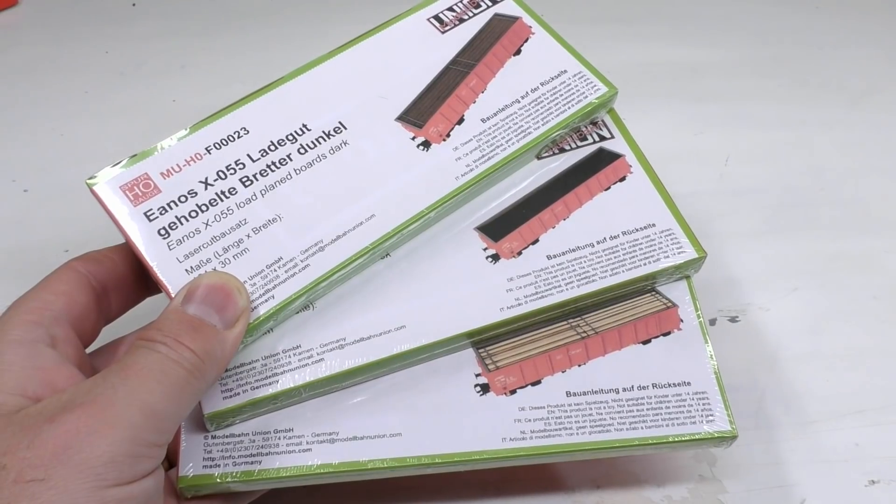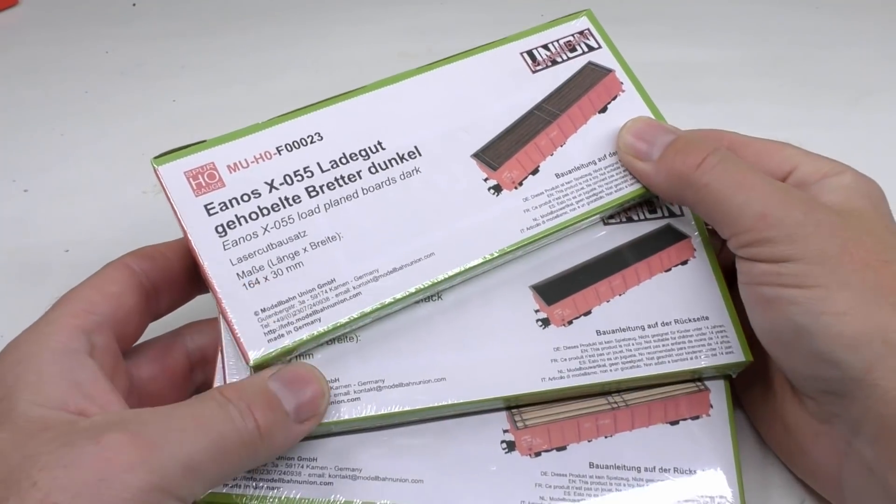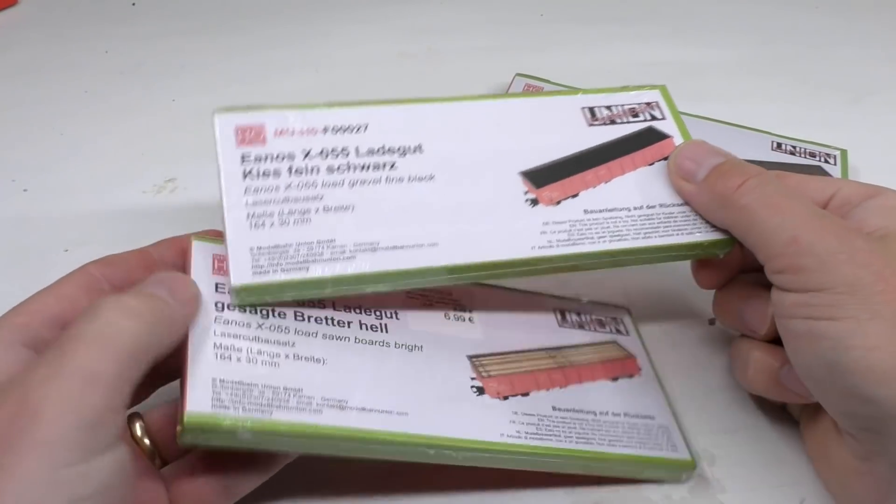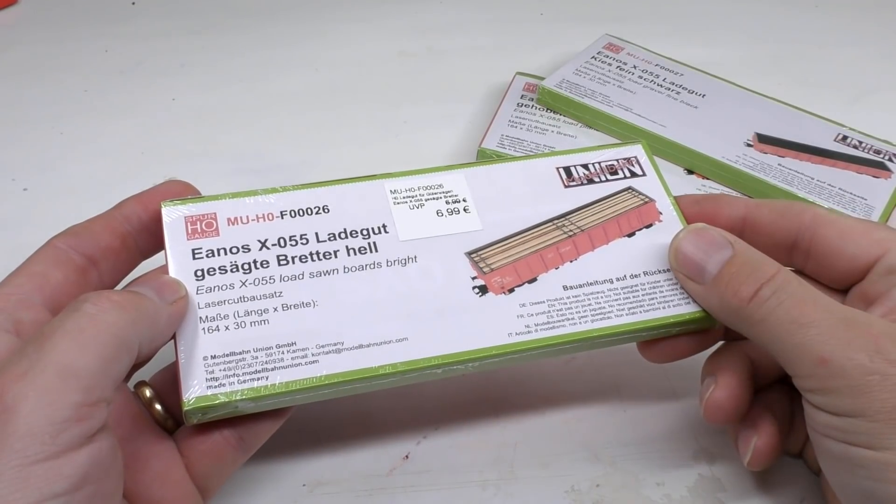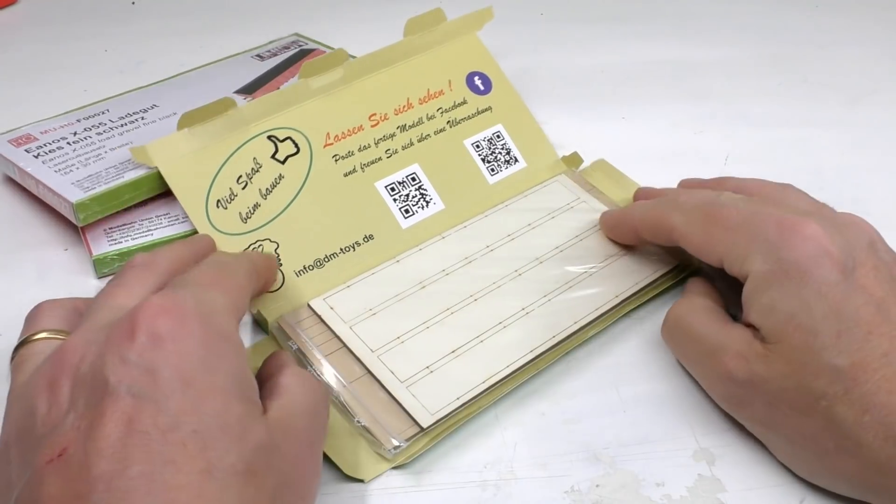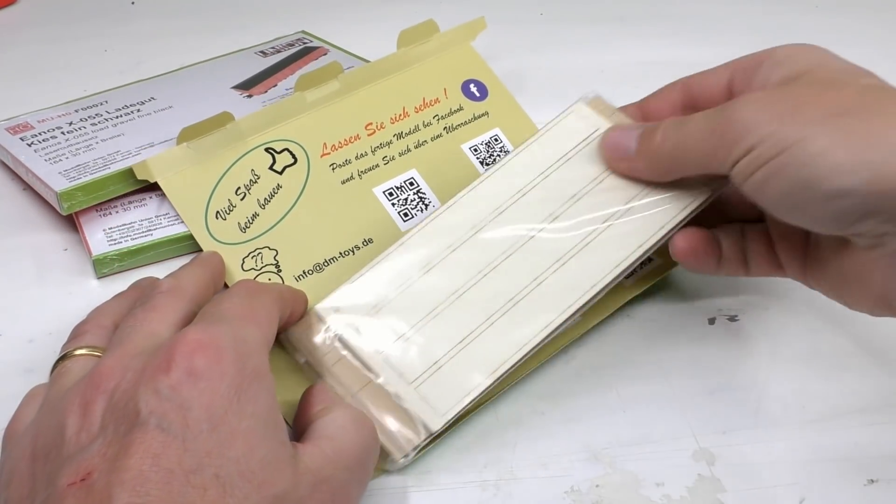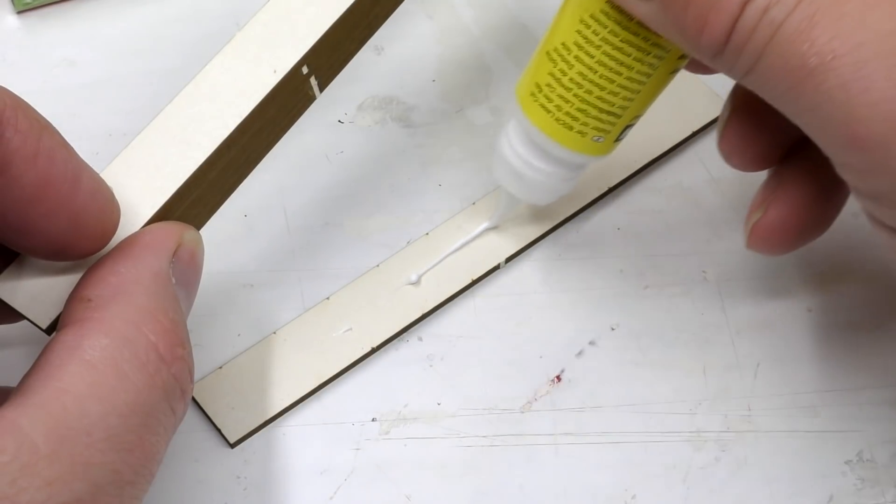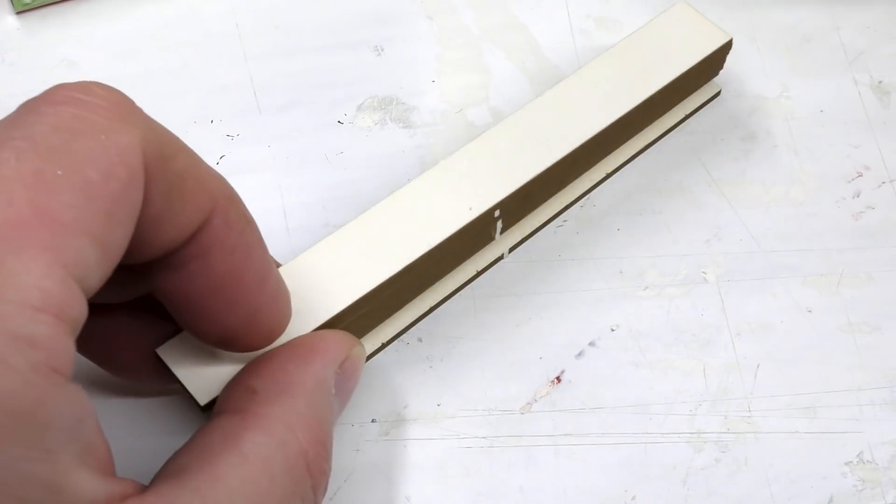We're starting off this cargo marathon by building kits from a manufacturer called Modellbahn Union. These type of laser cut kits really come in handy when it comes to model cargos with complex shape or texture. You will now find a link in the upper right hand corner to the Modellbahn Union web shop where you find the range of cargos.